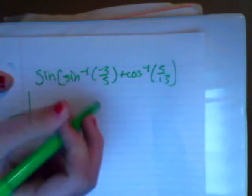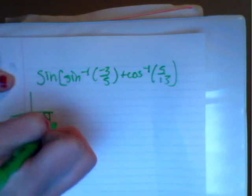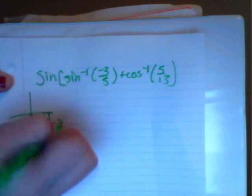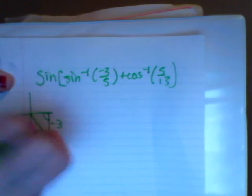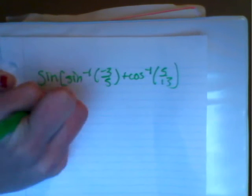And since it's negative three-fifths, negative 3 is going to be the opposite side, and 5 is going to be the hypotenuse. And the adjacent side is going to be 4.